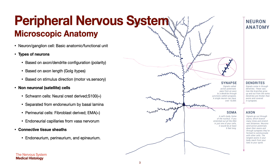We have also classification based on axon length — Golgi types. Type 1 has extensive dendrites and a long axon that forms nerves. Type 2 has short axons and these are the interneurons in your central nervous system pathways. We also have classification based on stimulus direction: motor versus sensory. Motor neurons control effector organs such as muscles and glands, while sensory neurons receive stimuli from your environment.